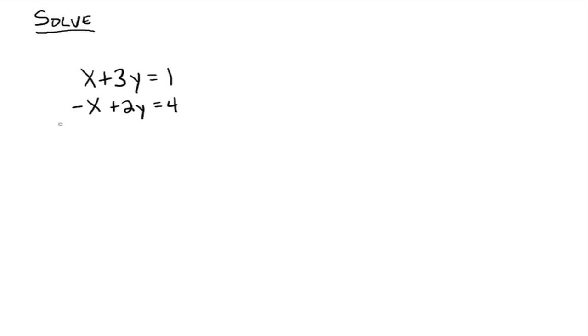We can see right here that if we just immediately added up our like terms, you get X, negative X, the X's go away, and you get 3Y plus 2Y, which is 5Y, and the right side you get 1 plus 4, which is 5. And you get 5Y equals 5, so Y equals 1.